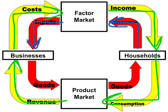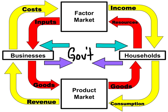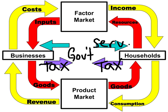Households are supplying resources in the factor market, and those economic inputs will be used to supply goods and services in the product market. We can also add the government to the middle of our circular flow model. The government purchases goods and services from businesses, and it also hires labor from households. The government also taxes businesses and households. In return, the government provides public goods and services to households, as well as income payments, and the government provides services and payments to businesses as well.